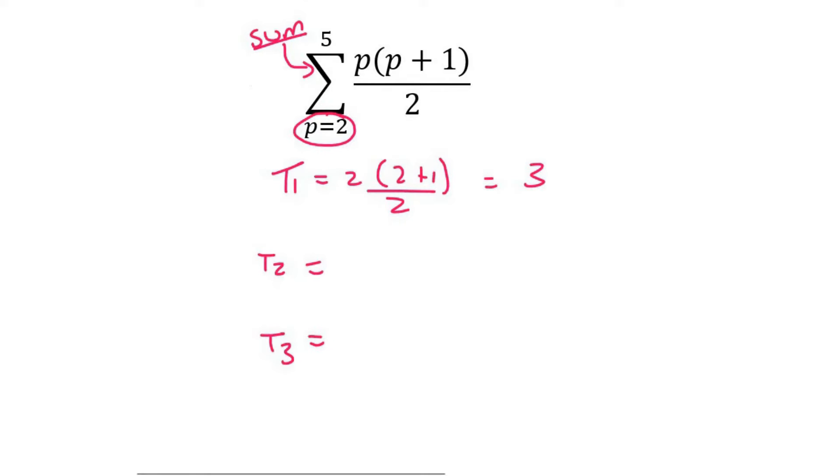And then to find term 2, you just increase this number by 1. So it'll be 3 times 3 plus 1 over 2, which is 6. And then to find term 3, we increase it again. So it'll be 4 times 4 plus 1 over 2, which is 10.